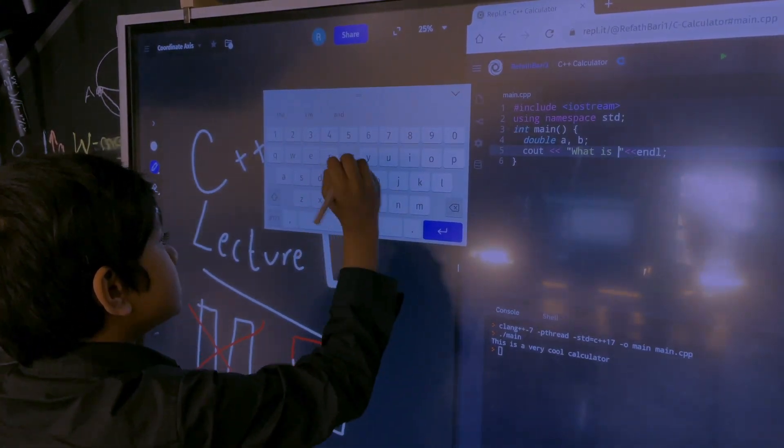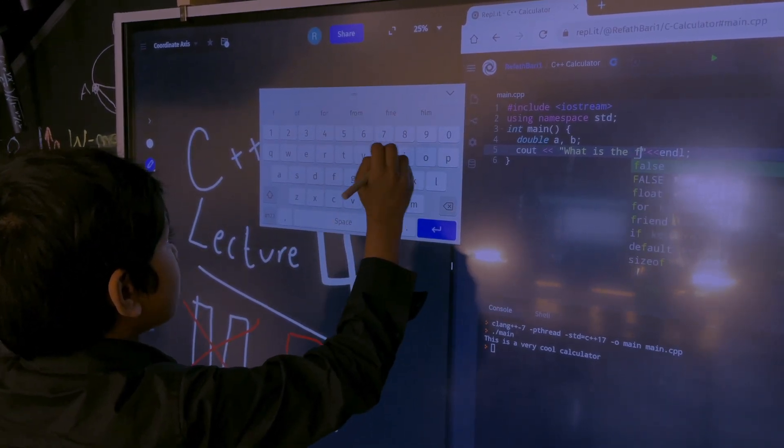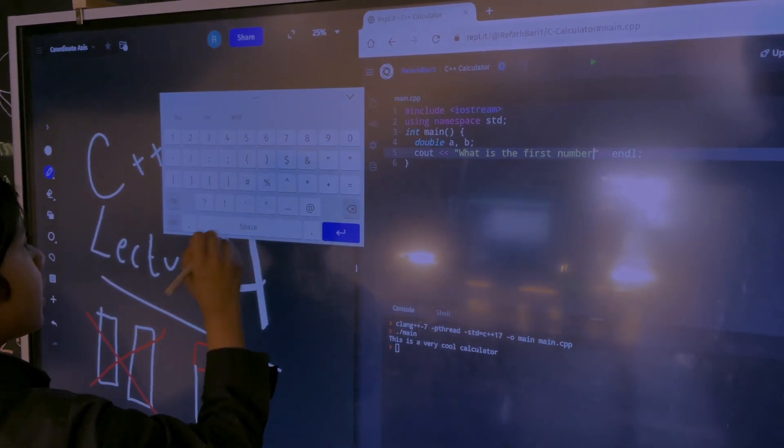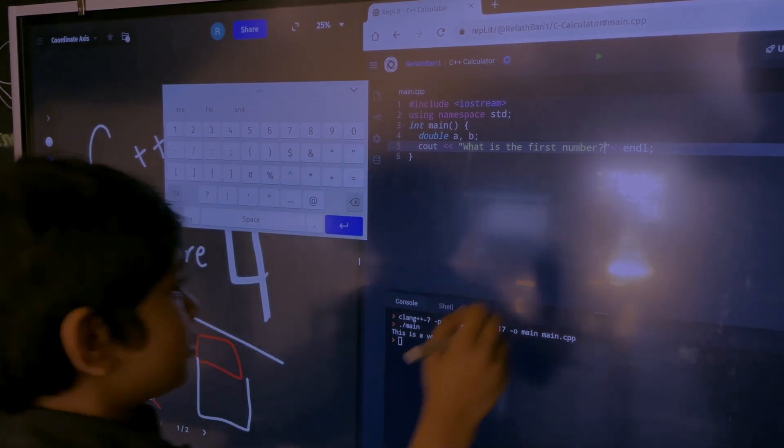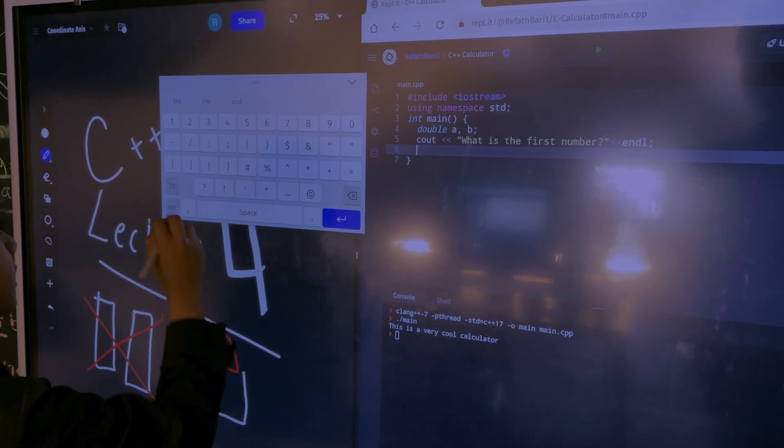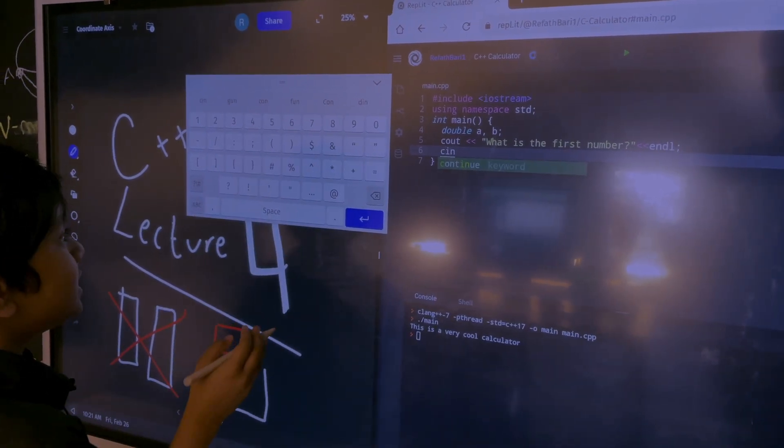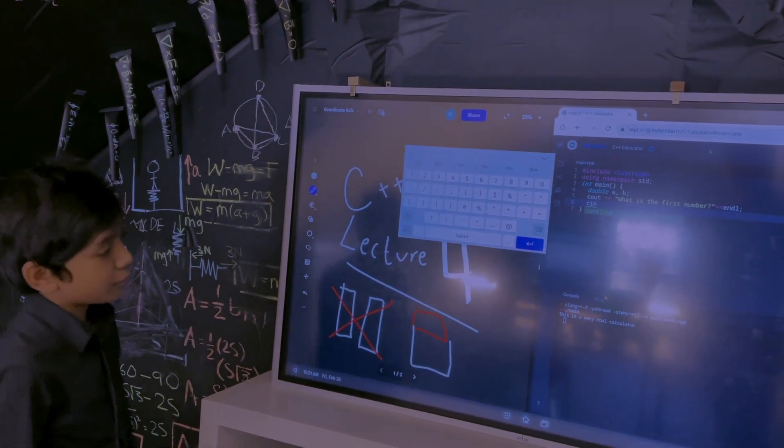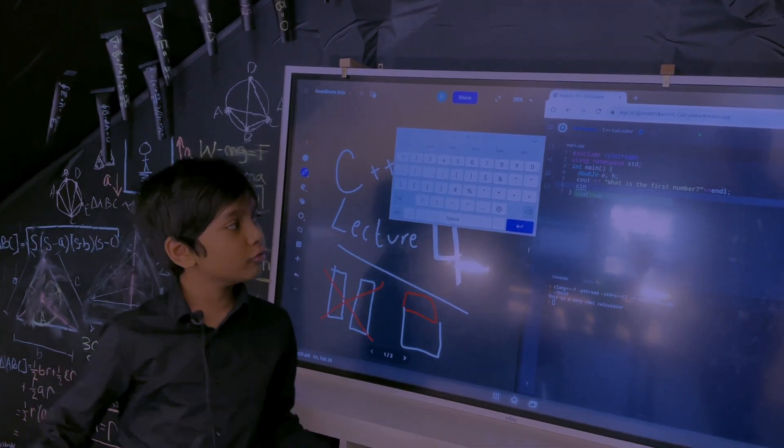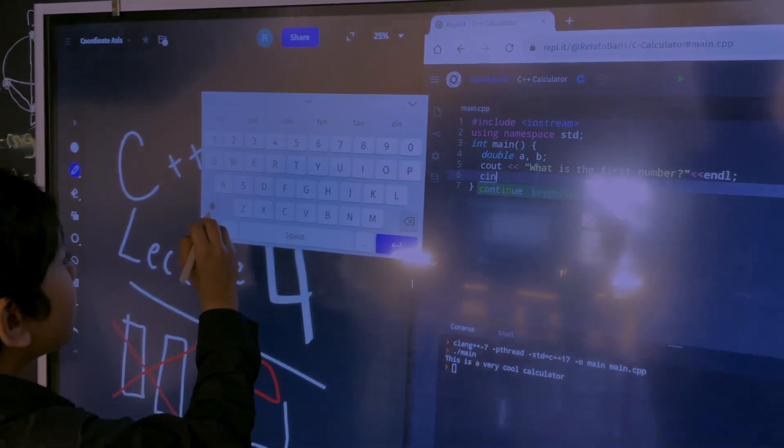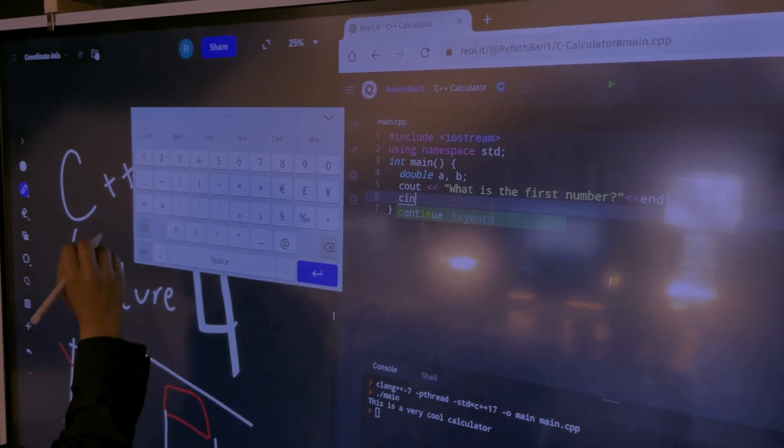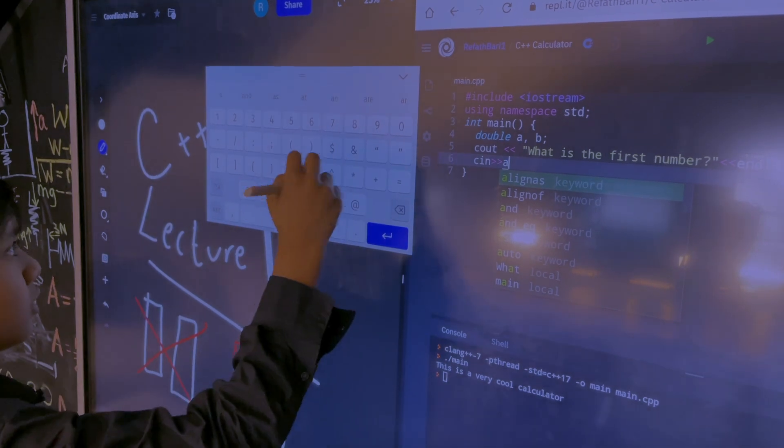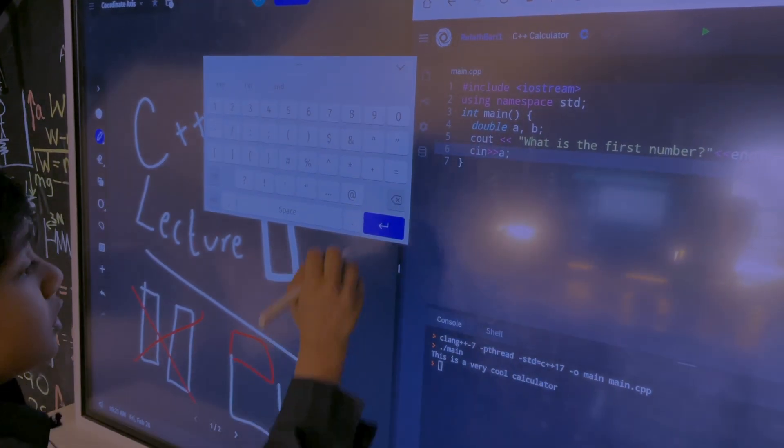So what you have to do is cout what is the first number. And then copy and paste would be super useful here. And then we could put cin A. Cin means it's taking in the user response, the user input. So if the user puts any sort of number, then that will be saved as the value of A. You have to put the operator for these to work. Operator looks like these.